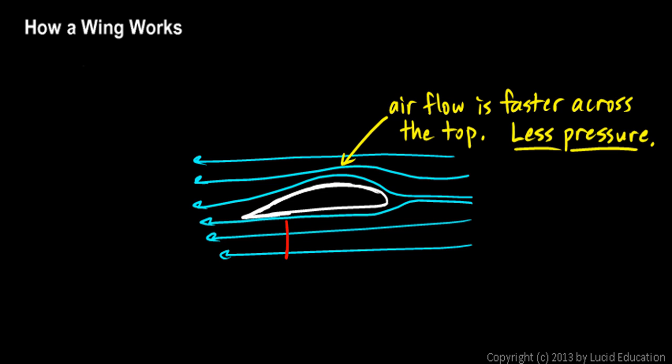So there's less pressure across the top of the wing than there is on the bottom. And this difference in pressure creates a net force upward. So I'll write this down here. Greater pressure, I'll just say P for pressure. Greater pressure on the bottom. Greater pressure on the bottom. So there's a net force up. And that net upward force is the lift.